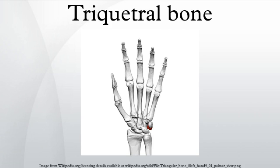The triquetral bone is located in the wrist on the medial side of the proximal row of the carpus, between the lunate and pisiform bones. It is on the ulnar side of the hand, but does not articulate with the ulnar. It connects with the pisiform, hamate, and lunate bones. It is the third most commonly fractured carpal bone.